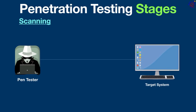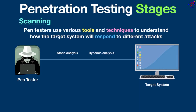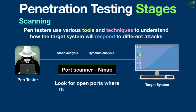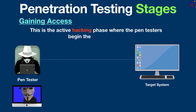The second stage is scanning. Using the information gathered from the previous stage, pen testers use various tools and techniques to understand how the target system will respond to different attacks. For example, pen testers might use a port scanner like Nmap to look for open ports where they can send malware. They may also check how security features react to intrusions — for example, by sending suspicious traffic to the company's firewall to see what happens.